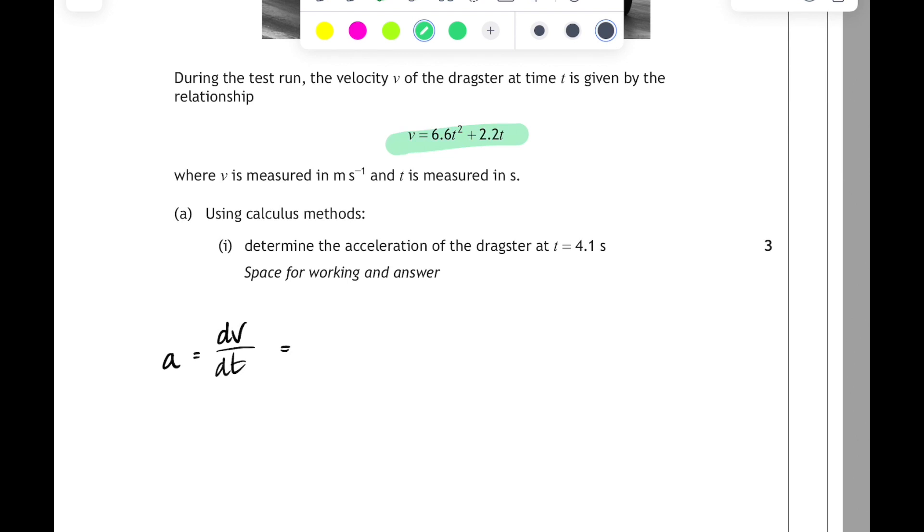Using your rules of differentiation from maths, you multiply by the power and the power goes down by 1. So 2 times 6.6 is 13.2, and the power goes down by 1, so that's 13.2t plus 2.2.